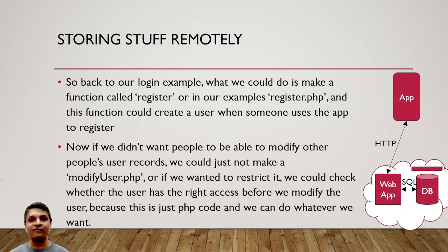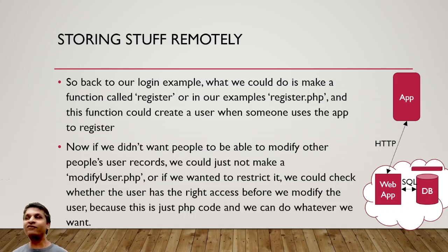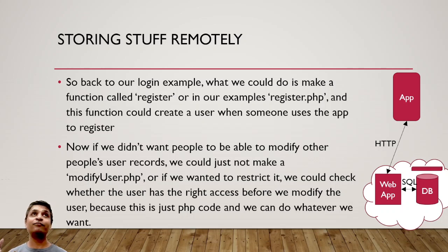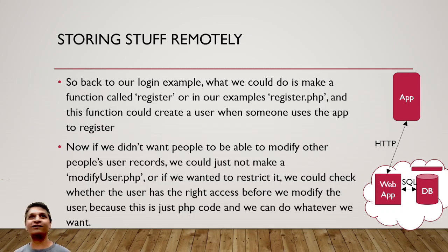PHP code is just normal code, like Java code. That means we can implement our own security. If the person accessing the site is Pravesh, he can change the users table generally. But if someone else accesses it, we can say they can only change their own record, not anyone else's. Looking at our login example: if we want people to register, we can make a file called register.php which inserts into the user table or checks if the user exists first. Because the mobile app can access that web service, people can register — they call register.php and do an insert. That script has no access to change the rest of the tables.